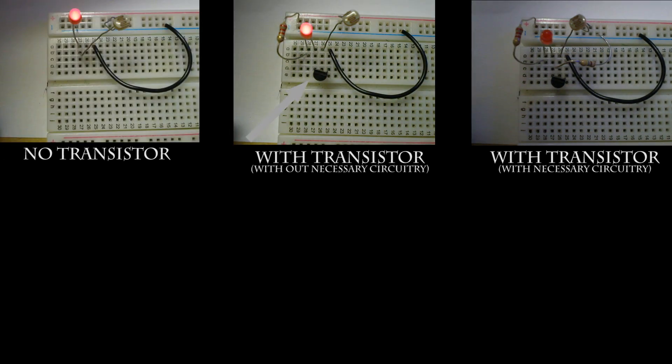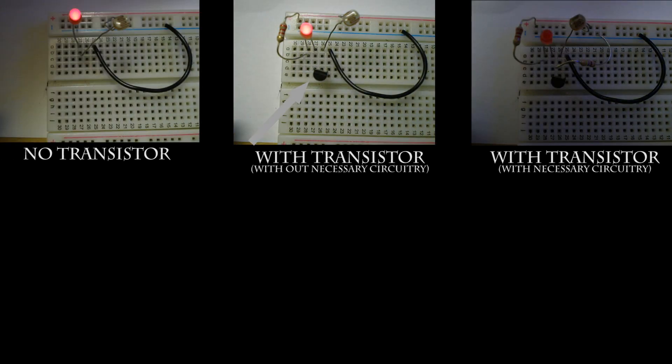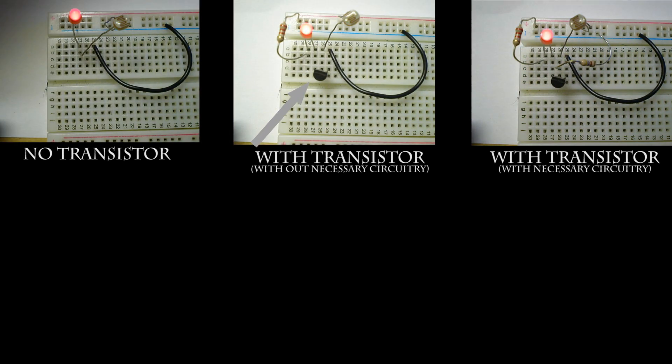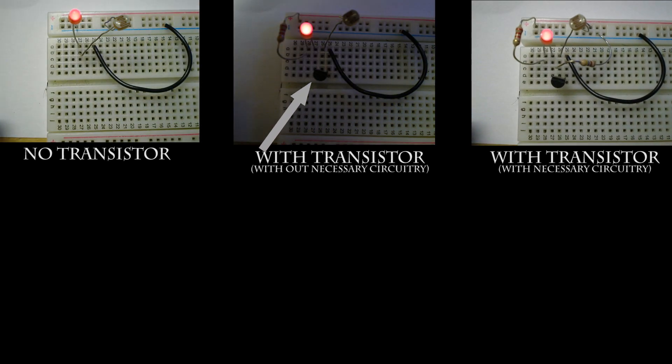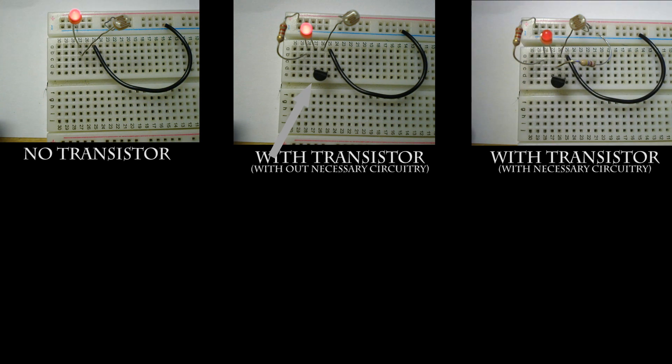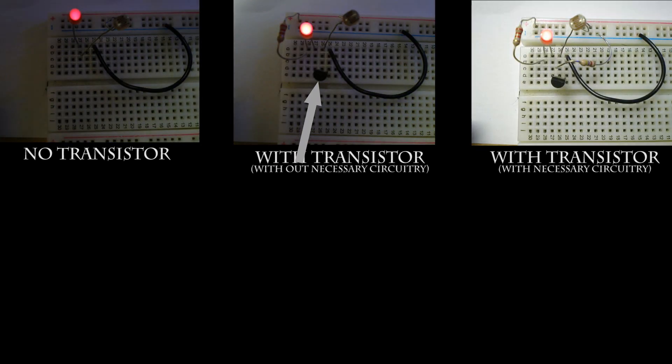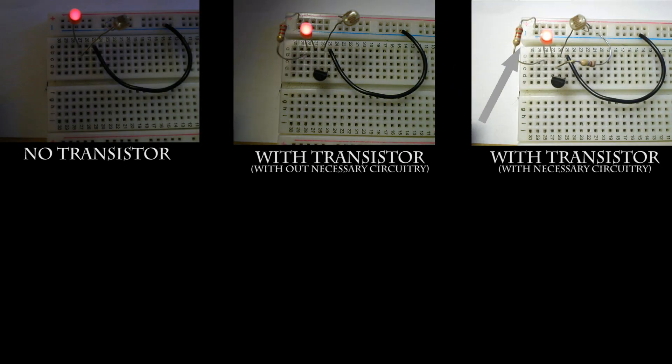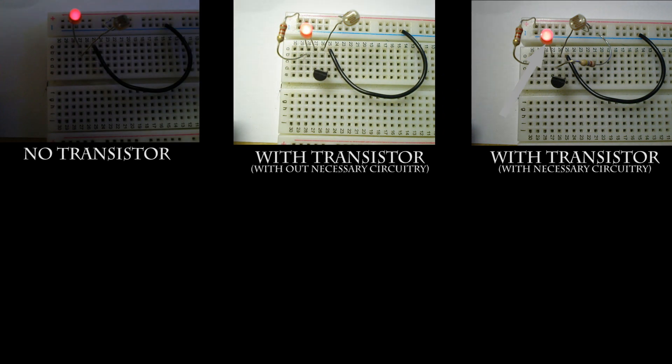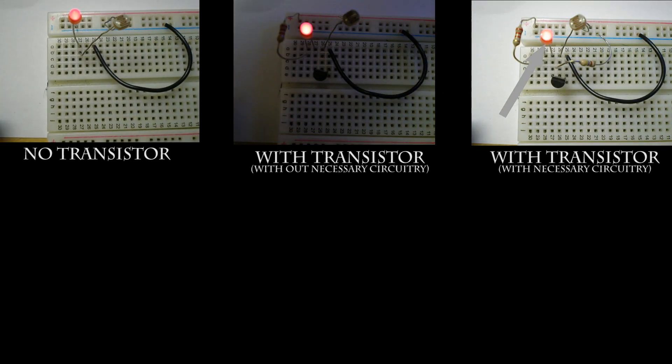This is because the photoresistor is always letting enough electricity through to the base pin, so that the transistor becomes saturated. This means that there is enough base current for there to be almost no resistance between the emitter and collector pins. Notice how in the third circuit, the LED turns off almost immediately after my hand covers the light source.